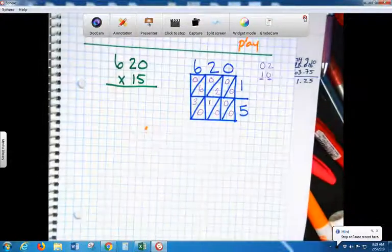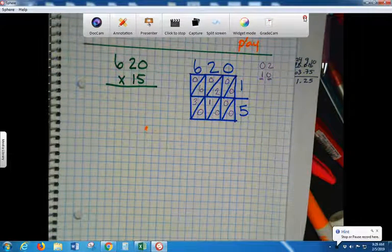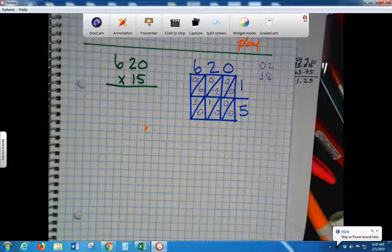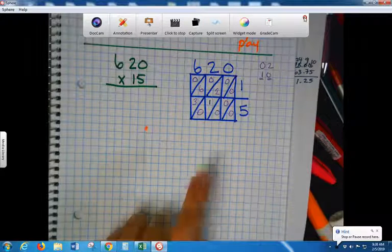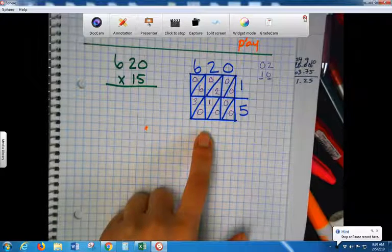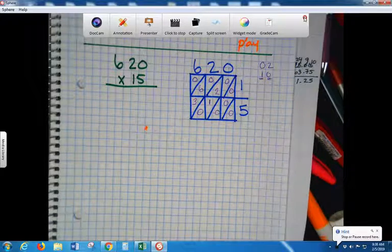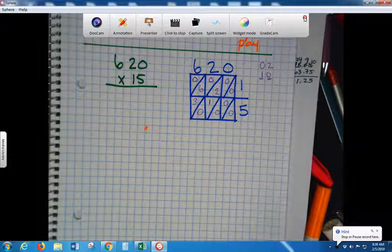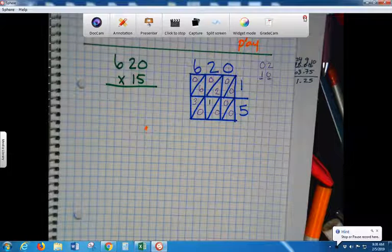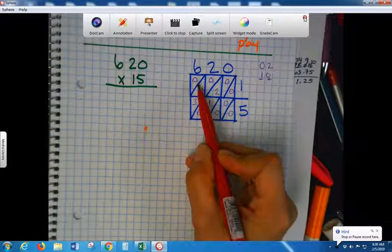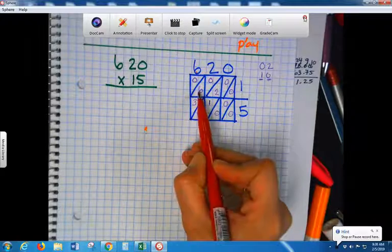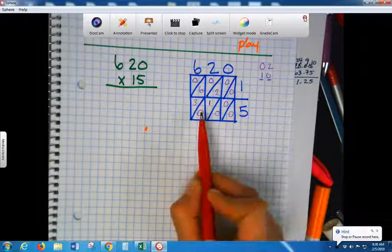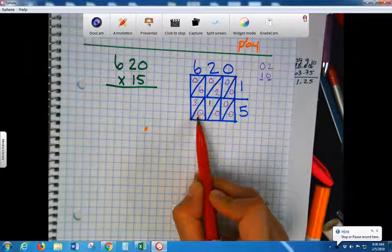So we're going to write it here. Now my answer is 10, so the 1 is in the tens place and the 0 is in the ones place. So we divide it up, we put the 1 on top and the 0 at the bottom. So that's 10. Follow me so far?